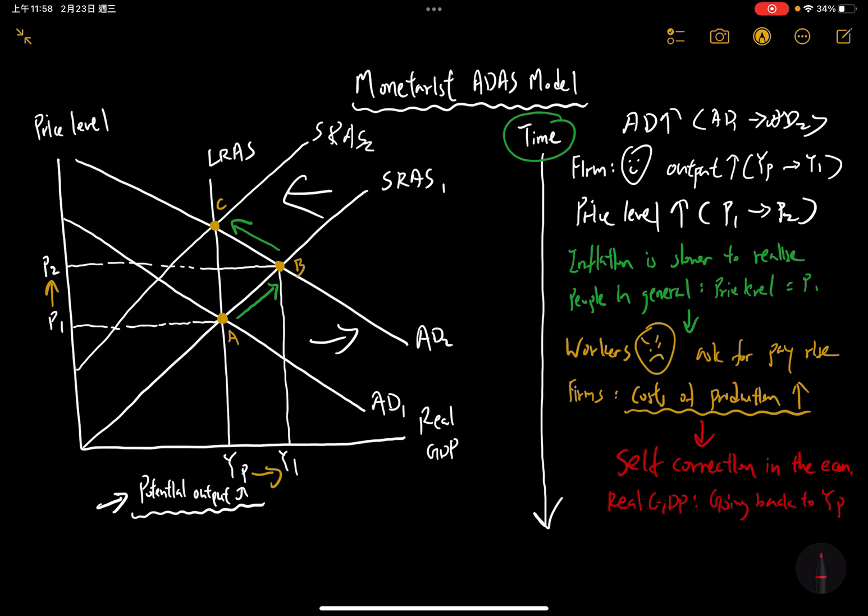But there is something different about the price level. Look at that. At point C, your price level is at P3, which is even higher than P2. So what is the meaning behind this? The meaning behind this is very simple. It's just like what the monetarists believe.